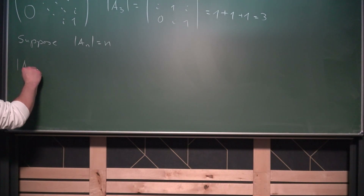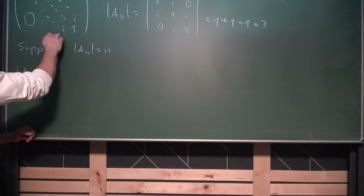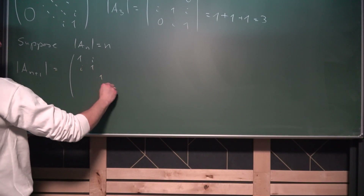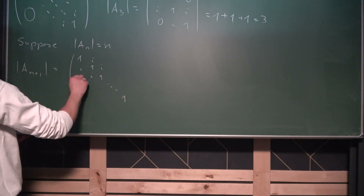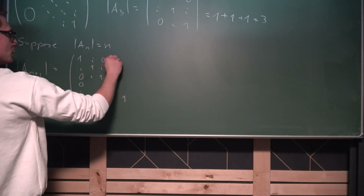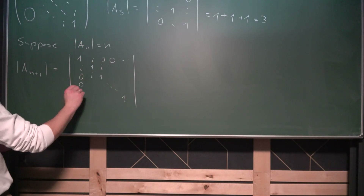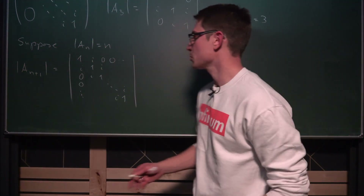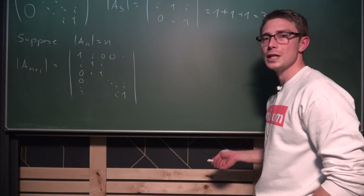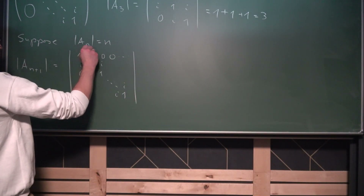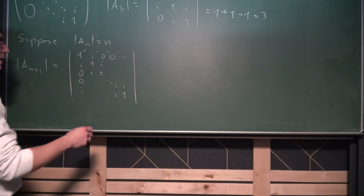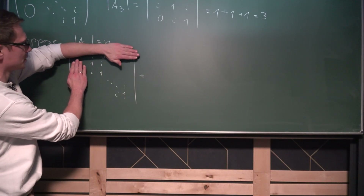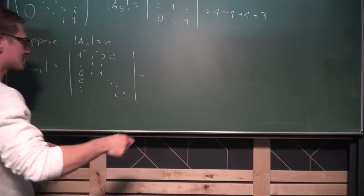We are going to look at the determinant of A_{n+1}. That's just the determinant of this matrix here — 1, i, i, 1, 1, and so on with i's adjacent to the diagonal and zeros elsewhere. Just like last time, we are going to use Laplace's algorithm to reduce everything, remembering the signs: plus, minus, plus, and so on. We take the determinants and reduce the dimensions by 1.